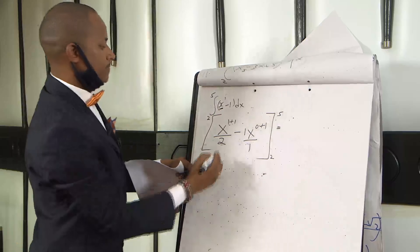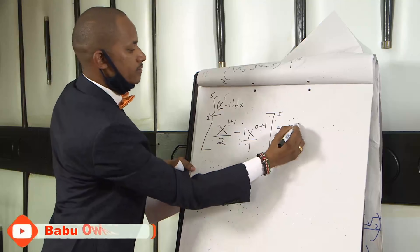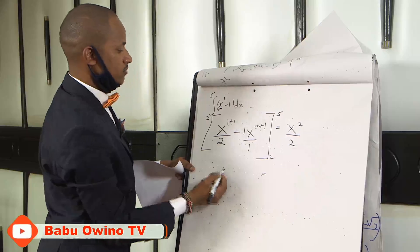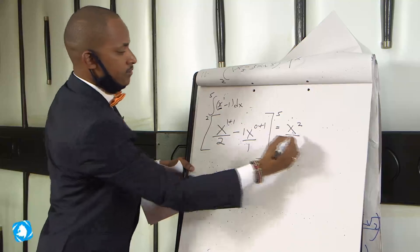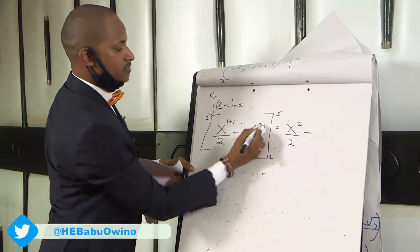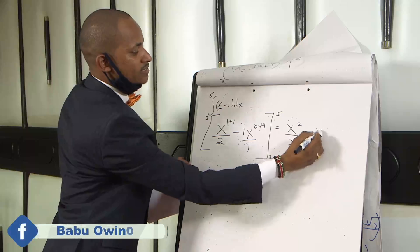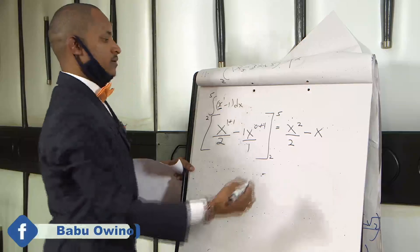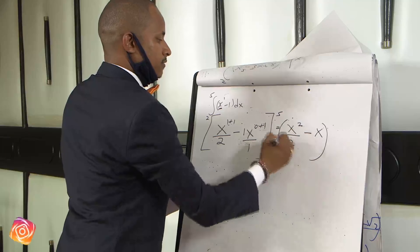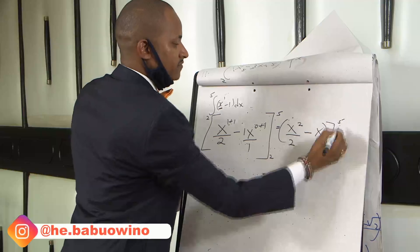This gives us x squared divided by 2 minus x raised to power 1. 0 plus 1 is 1, so therefore x power 1 is x. Limits of 5 and 2.